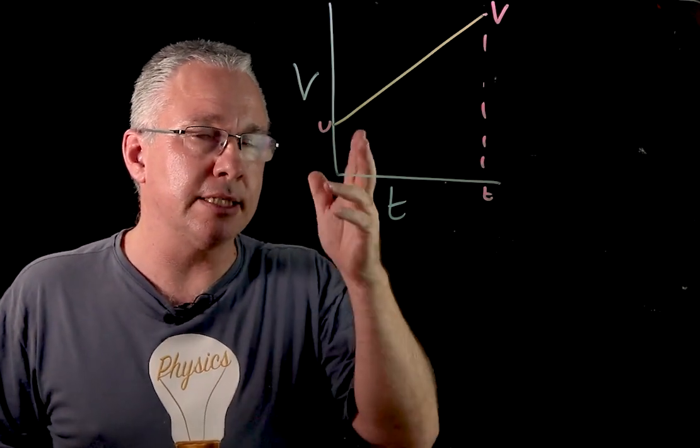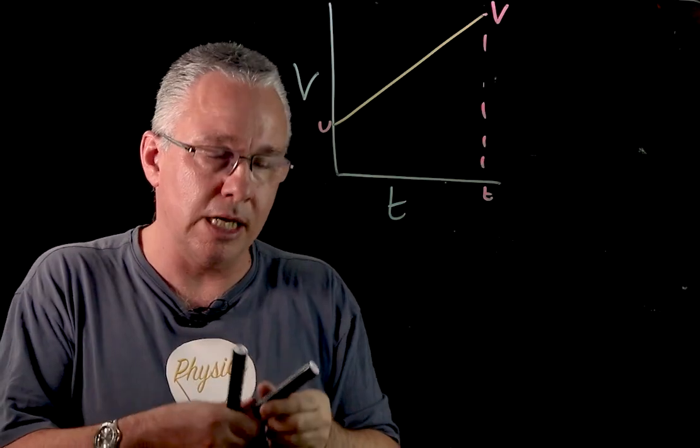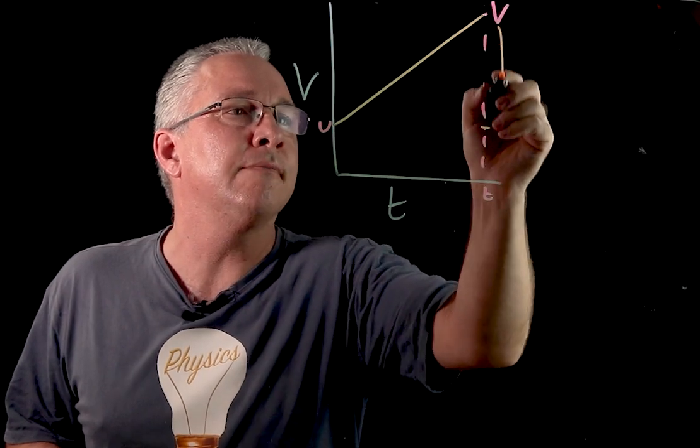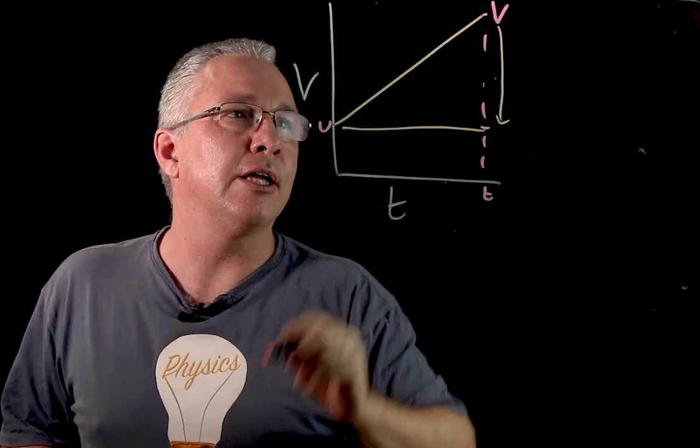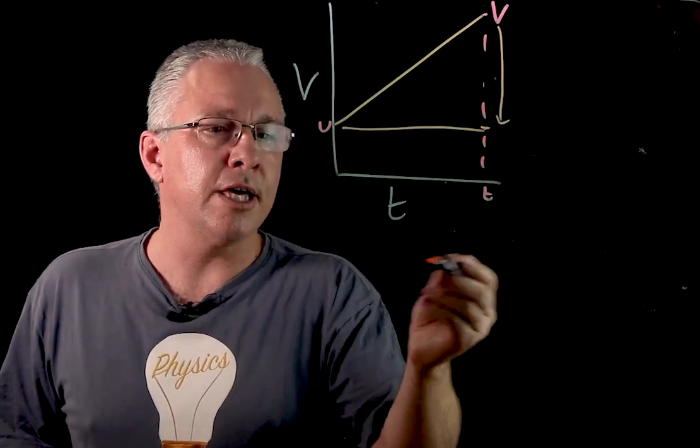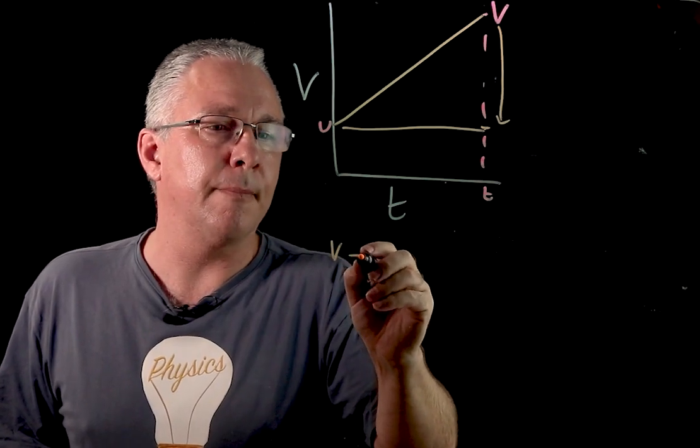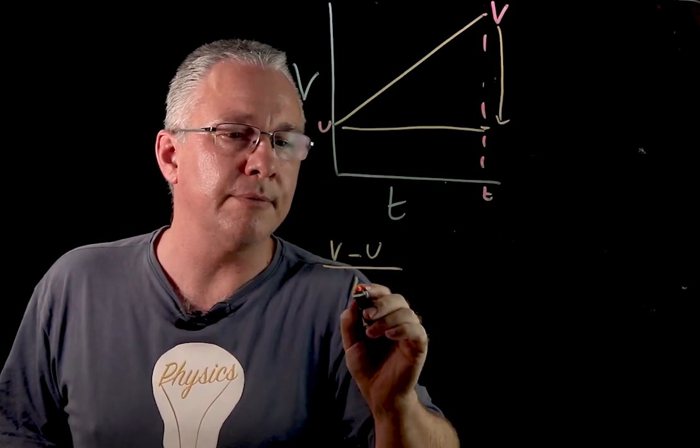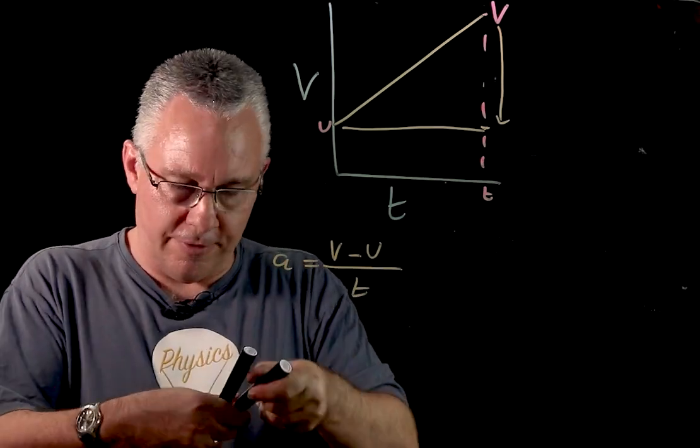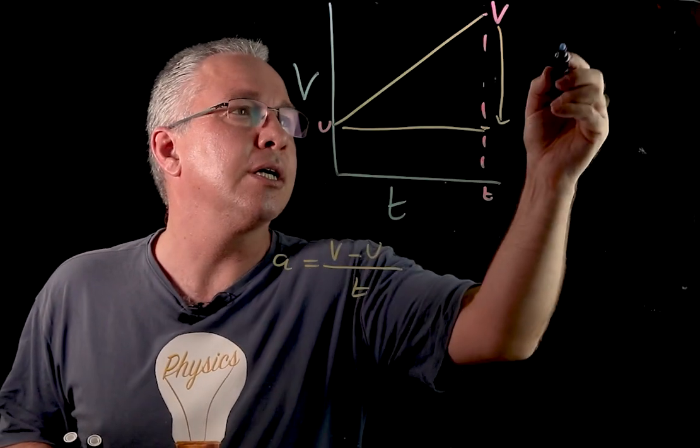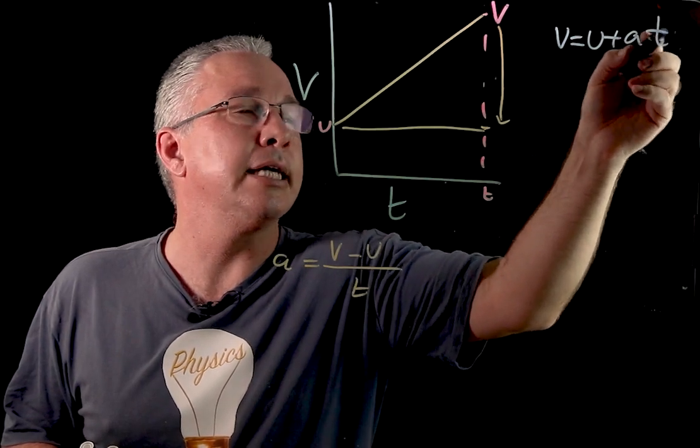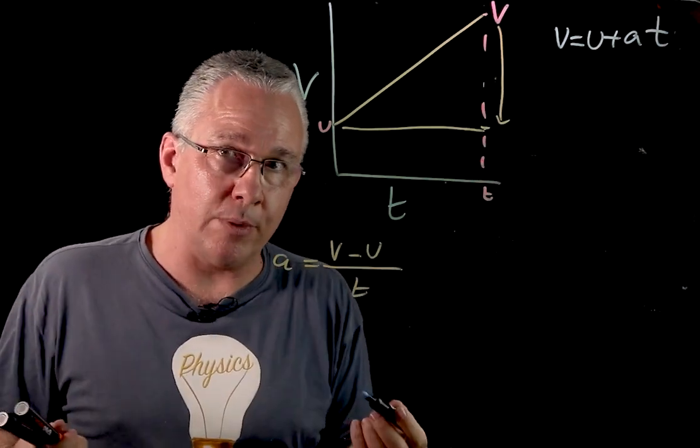So as I said, the first thing is that the acceleration is determined by the slope of that line. And to determine the slope, it's the rise over the run. So in other words, it's this value here over this value here. Now, it's pretty clear that this total value is v, this is u. So therefore, the slope, the rise over the run, is v minus u over the run, which is t. And of course, that is equal to our acceleration. If I rearrange that, I get my first equation of motion. And it's often written like this, I have v equals u plus at. So there is our first equation of motion.